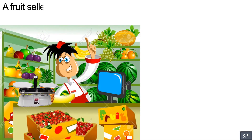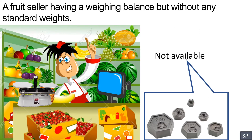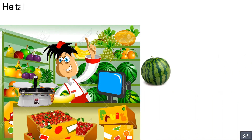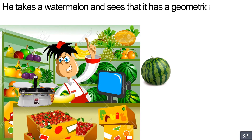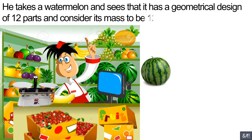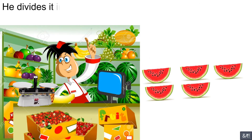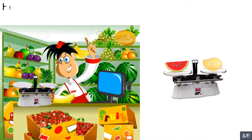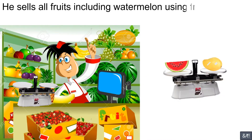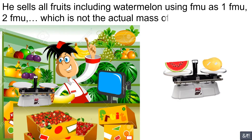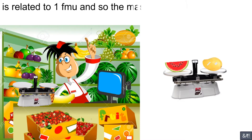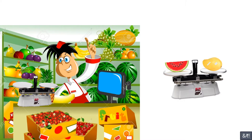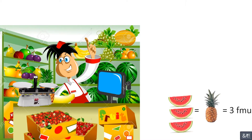Let us consider an example to understand this. A fruit seller has a weighing balance but without any standard weights. He takes a watermelon and sees that it has a geometrical design of 12 parts, and considers its mass to be 12 fruit mass units. He divides it into 12 equal pieces, and now one piece is one fruit mass unit. He sells all fruits including the watermelon using F-MU as one F-MU, two F-MU, etc., which is not the actual mass of the fruits sold but is related to one F-MU, and so the mass is called relative fruit mass.